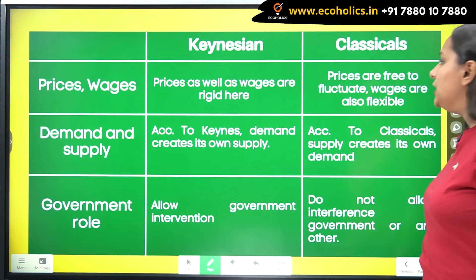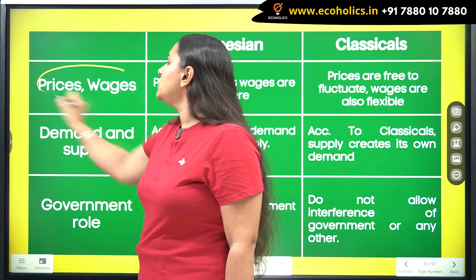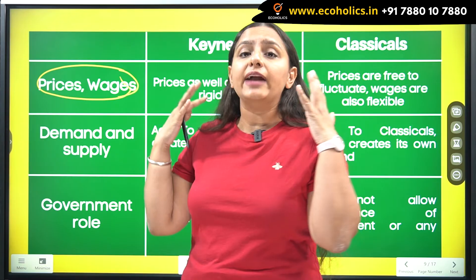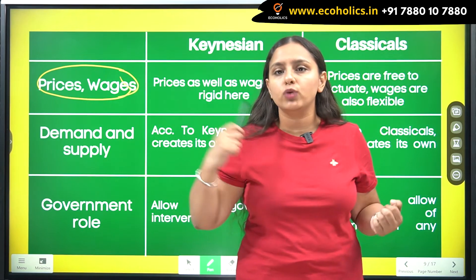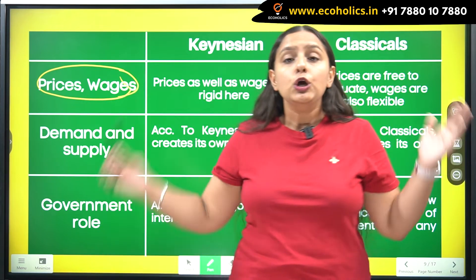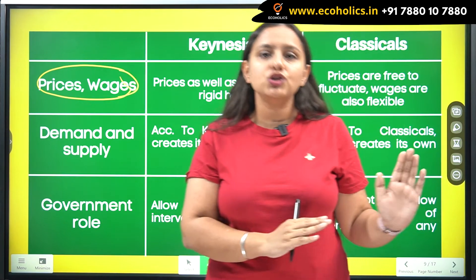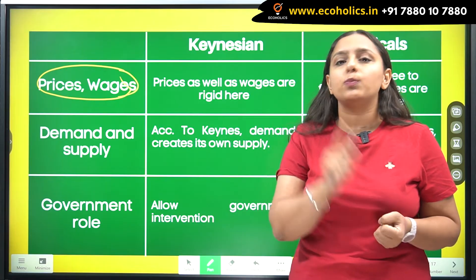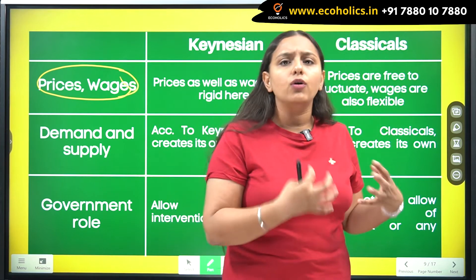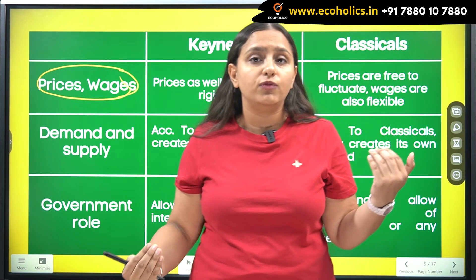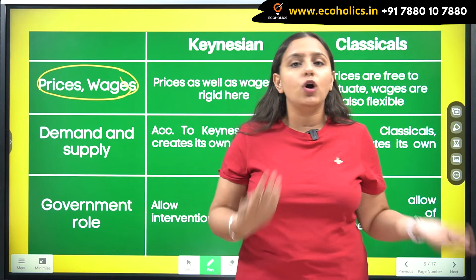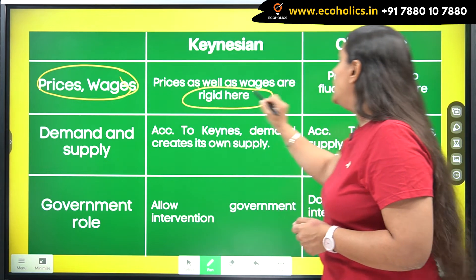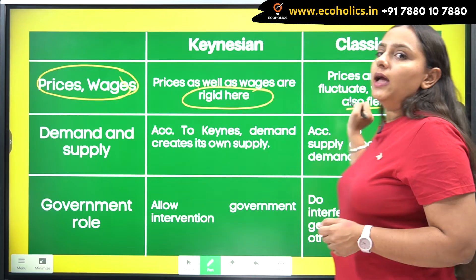After employment, we come to prices and wages. Classicals believe that prices and wages are fully flexible. Workers have perfect information about prices, so they know their real wages. Keynesians, however, believe that prices and wages are not fully flexible — wages are sticky. Workers will not accept a wage cut, and sudden wage increases will not happen either. Because of these reasons, prices also tend to be sticky in the short run. So prices and wages are rigid in the Keynesian view, whereas in Classicals they are fully flexible.